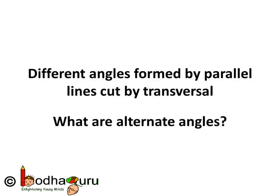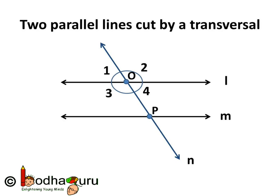Hello children. When two parallel lines are cut by a transversal, then at each point of intersection four angles are formed.